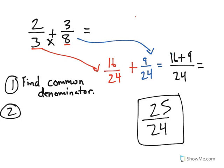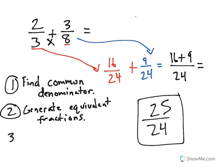Once you find a common denominator, generate equivalent fractions for both. That's where we asked, what does 2/3 equal when 24 is its denominator? Then once you have the equivalent fractions, add them together.